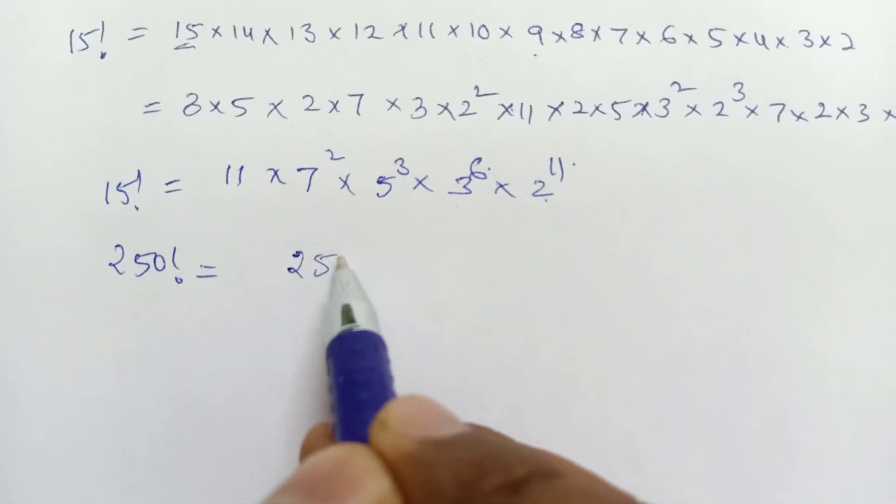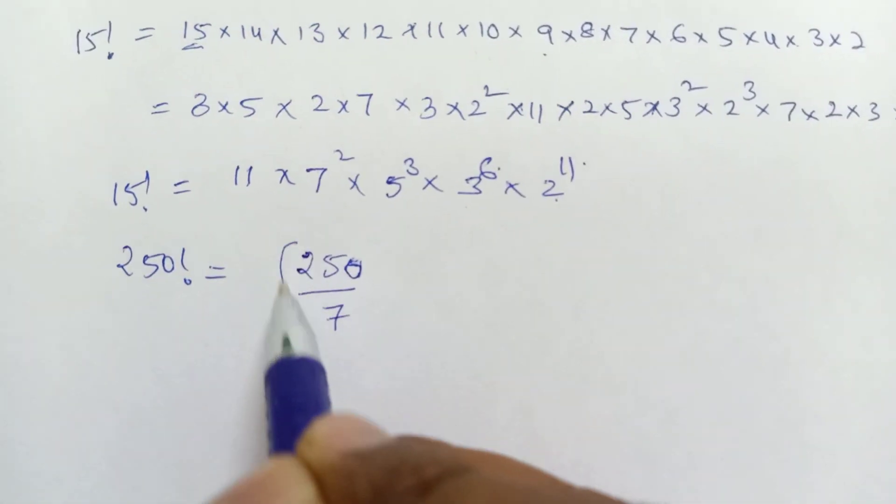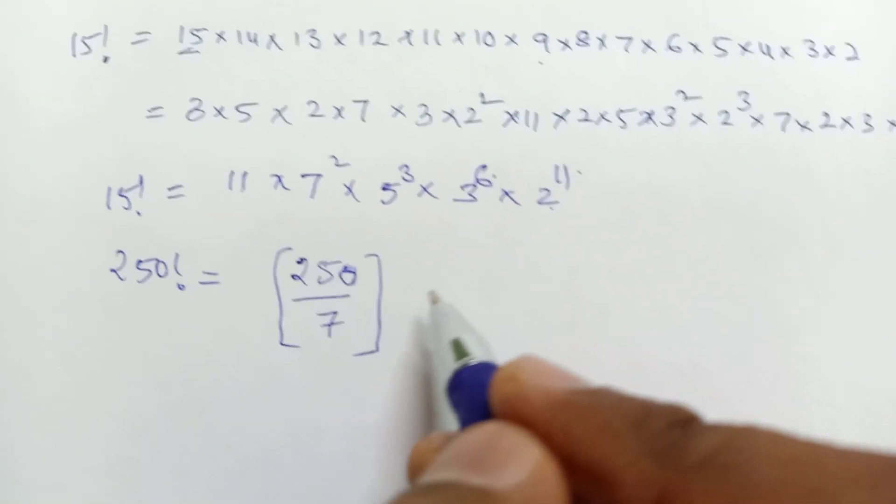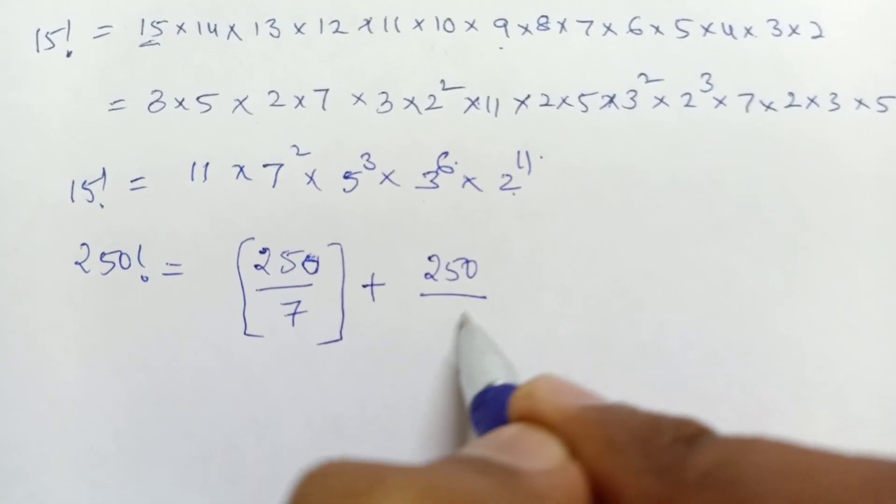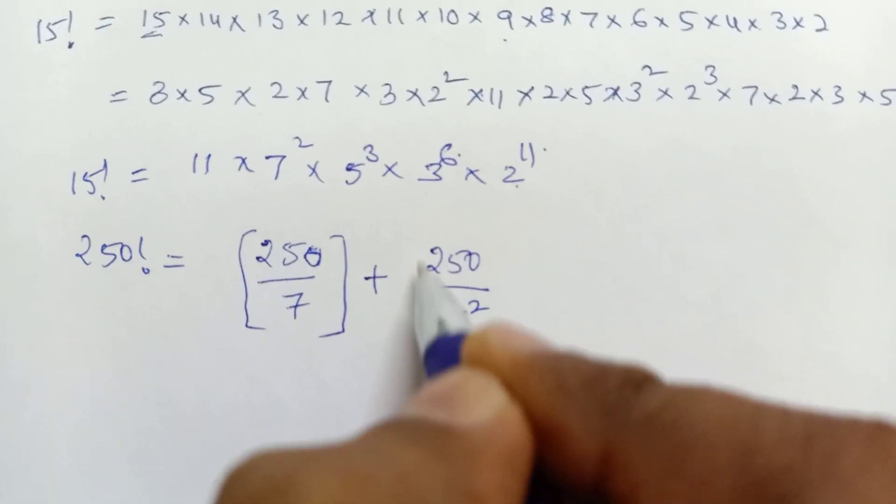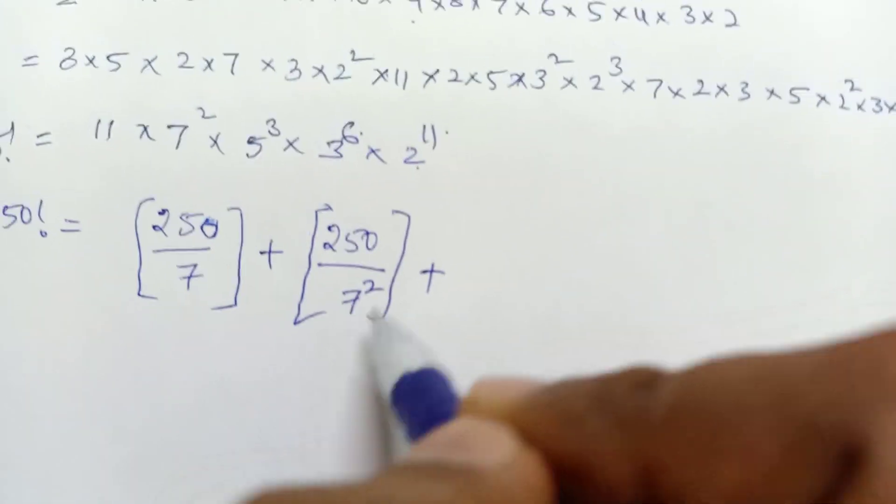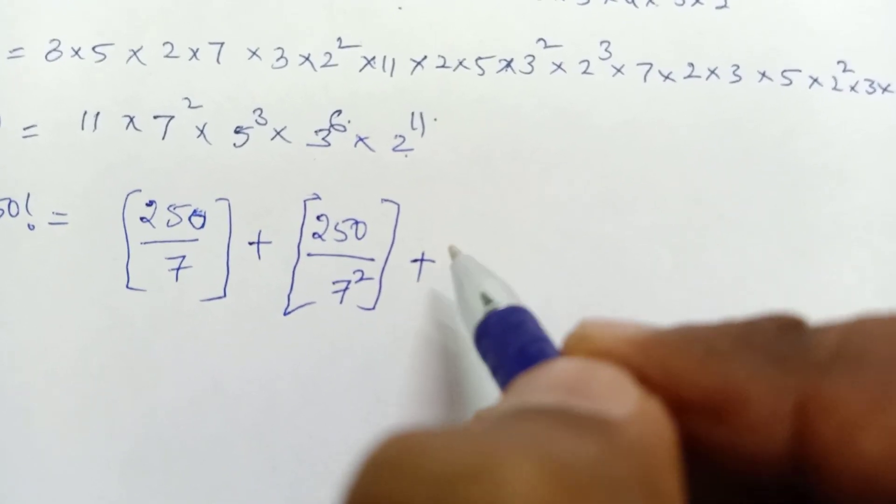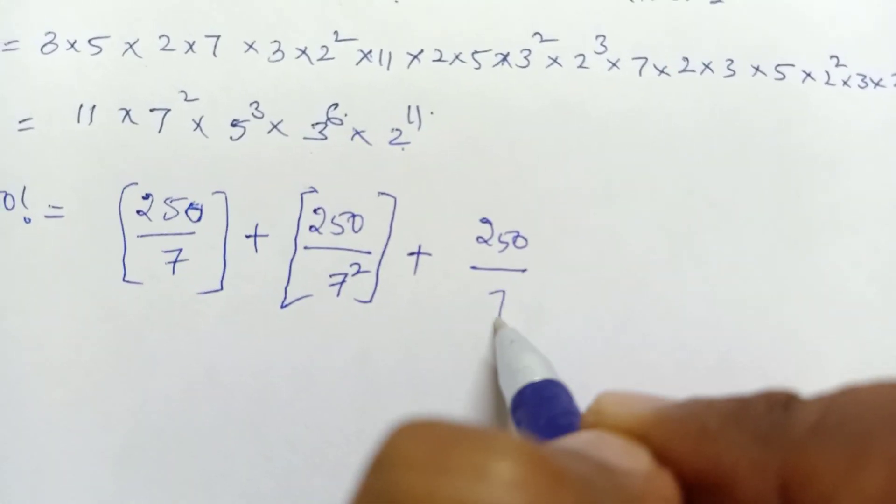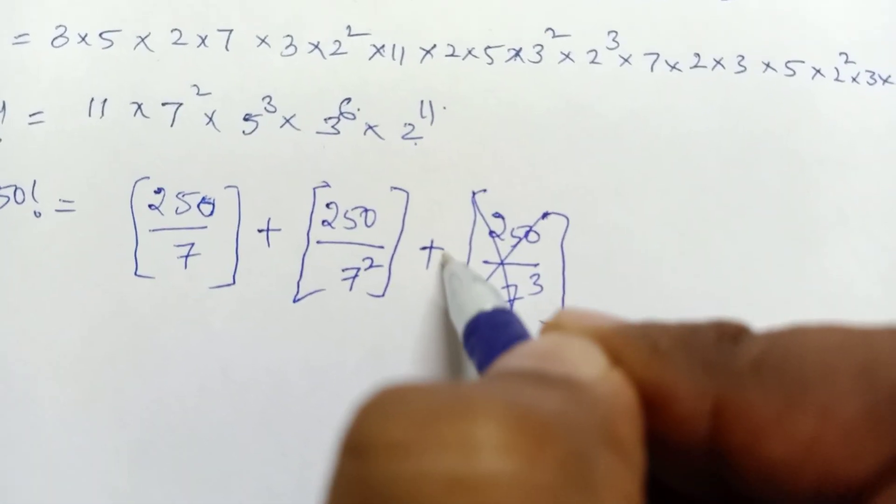If we want the highest power of 7, we take 250 divided by 7 as an integer value, ignoring the decimal. Plus 250 divided by 7 squared. Plus 250 divided by 7 cubed. We continue until the denominator value exceeds 250.